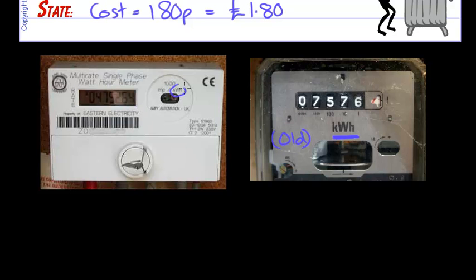but there it is, kilowatt hours, and it's a digital display in the new version. So each kilowatt hour will cost a certain amount of money depending on what kind of scheme you're on with your electricity supplier.